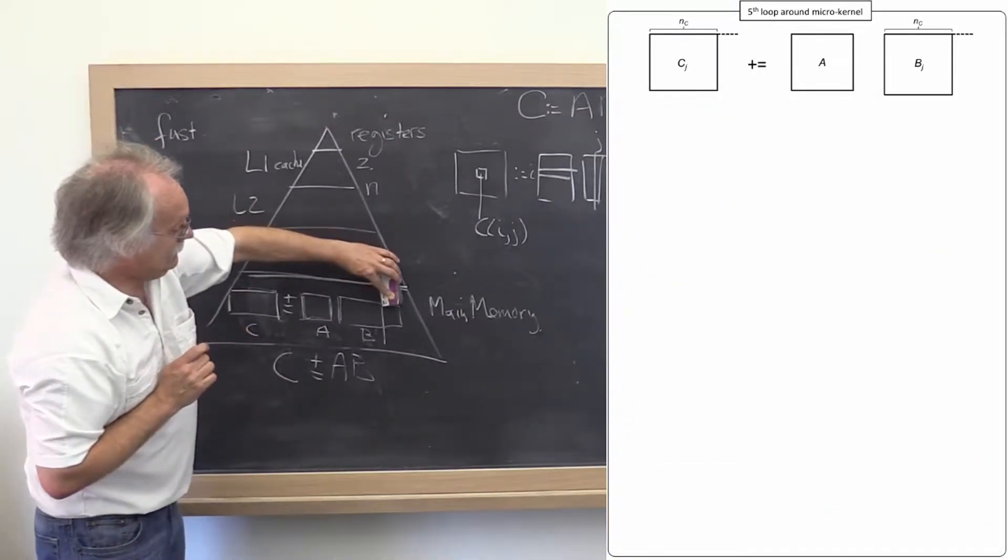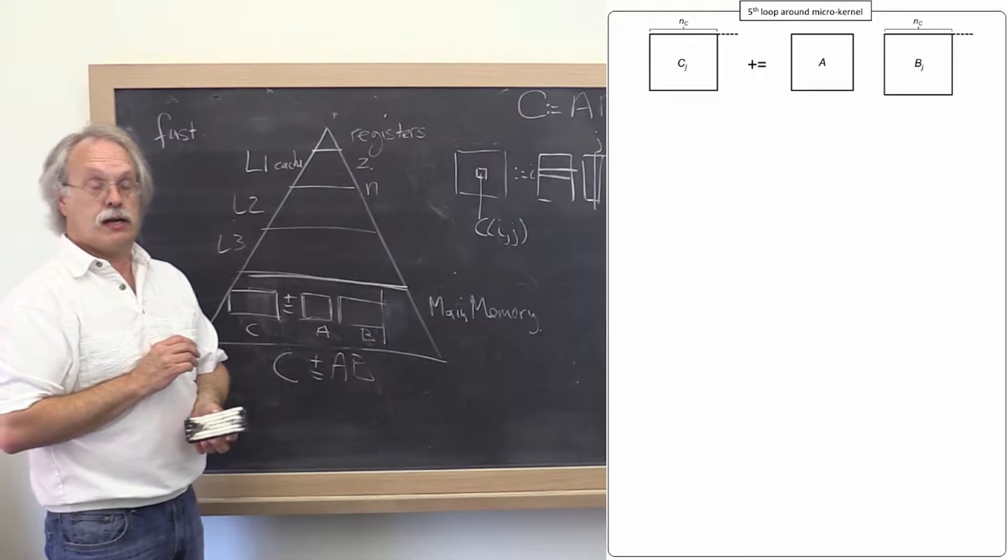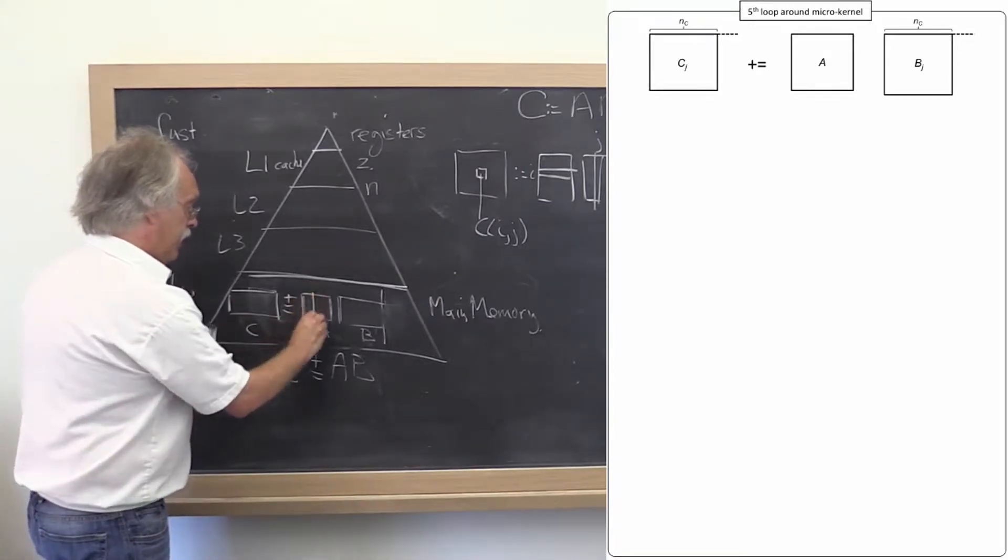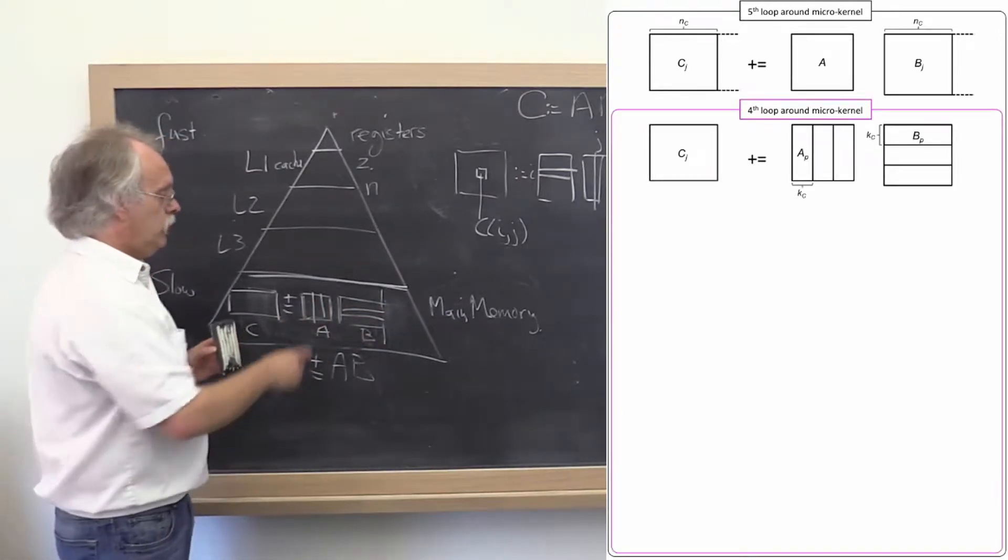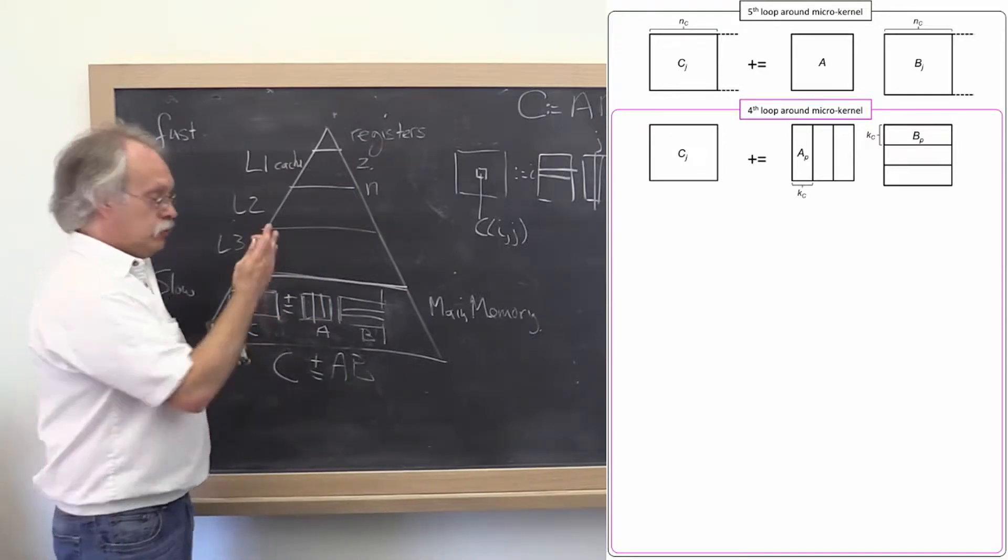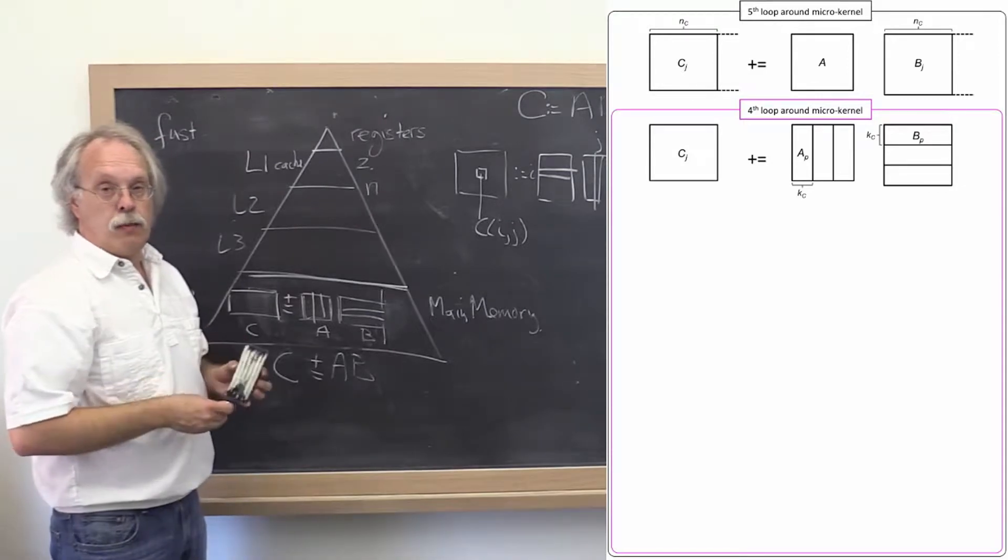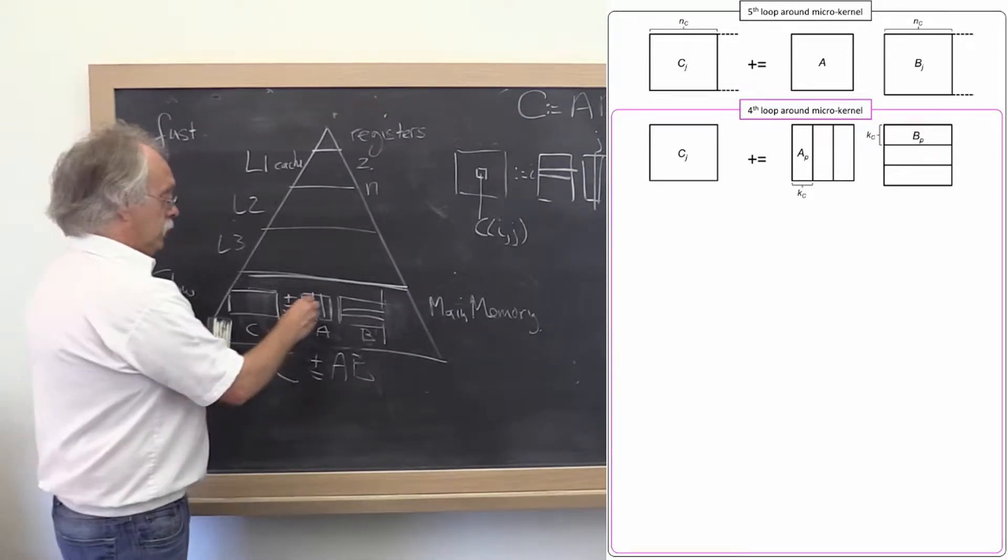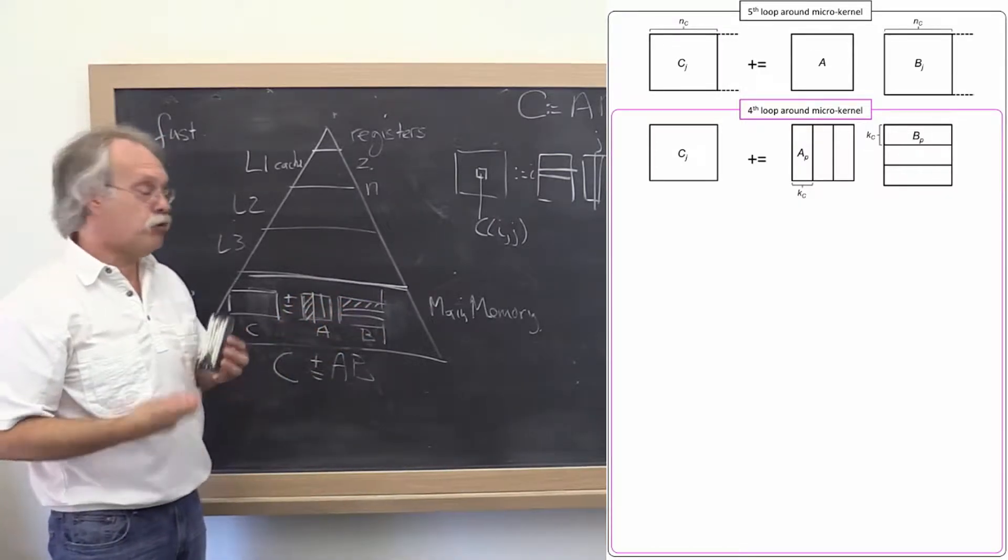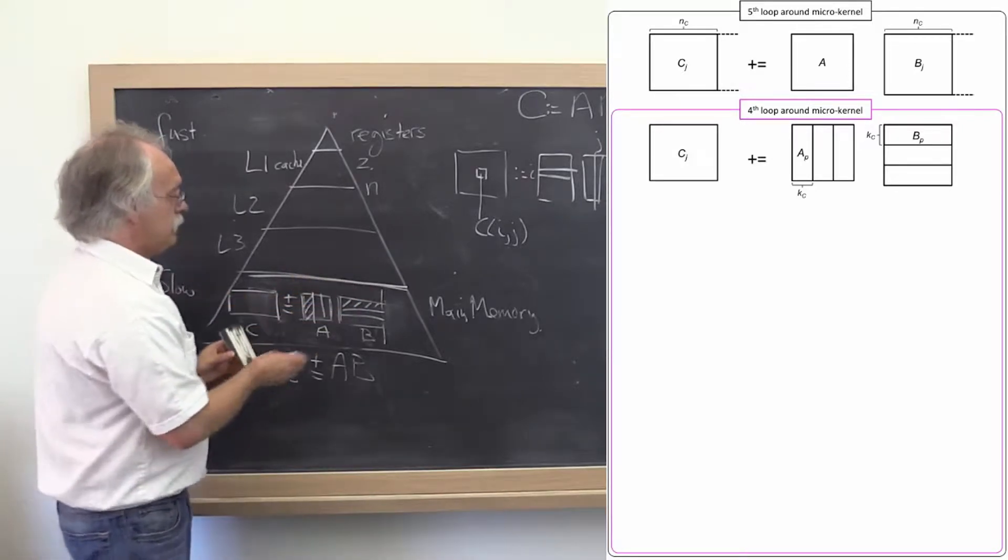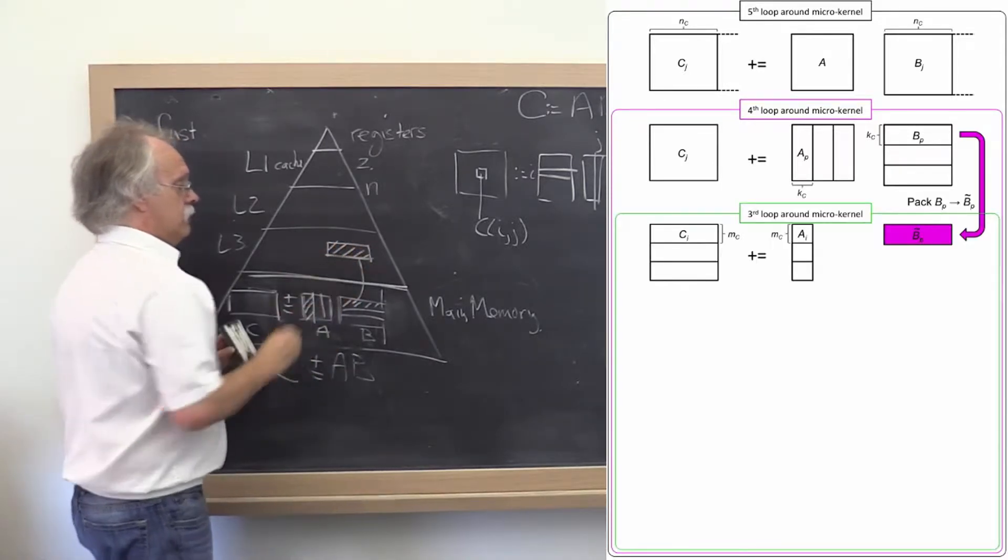So the next level down, we now are left with a problem of this size. And what we do is we go and we partition A and B so that we march through the matrix A by columns and B by rows. We ended up with an algorithm that casts most computation in terms of a rank K update. Now the purpose of the game here is to do these partitionings in such a way that this block actually fits in the L3 cache.